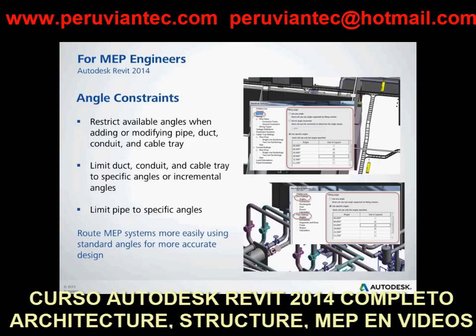You can now restrict the available angles when adding or modifying pipe, duct, conduit, and cable tray, which controls the model according to industry standards. Piping may now be limited to specific angles, while duct, conduit, and cable tray may be limited to specific angles or incremented angles. This helps improve design with the ability to route MEP systems more easily using standard angles for more accurate design.